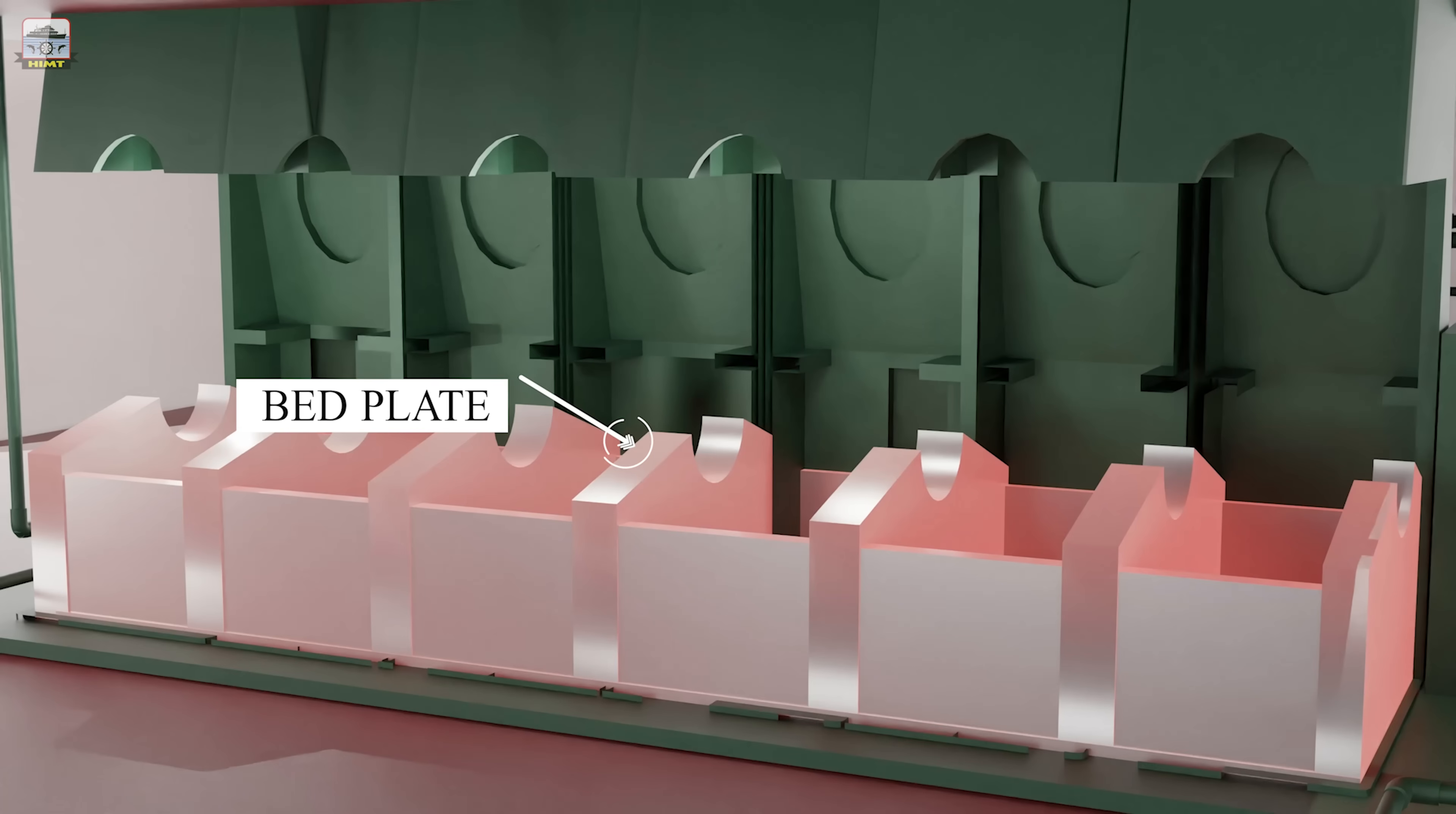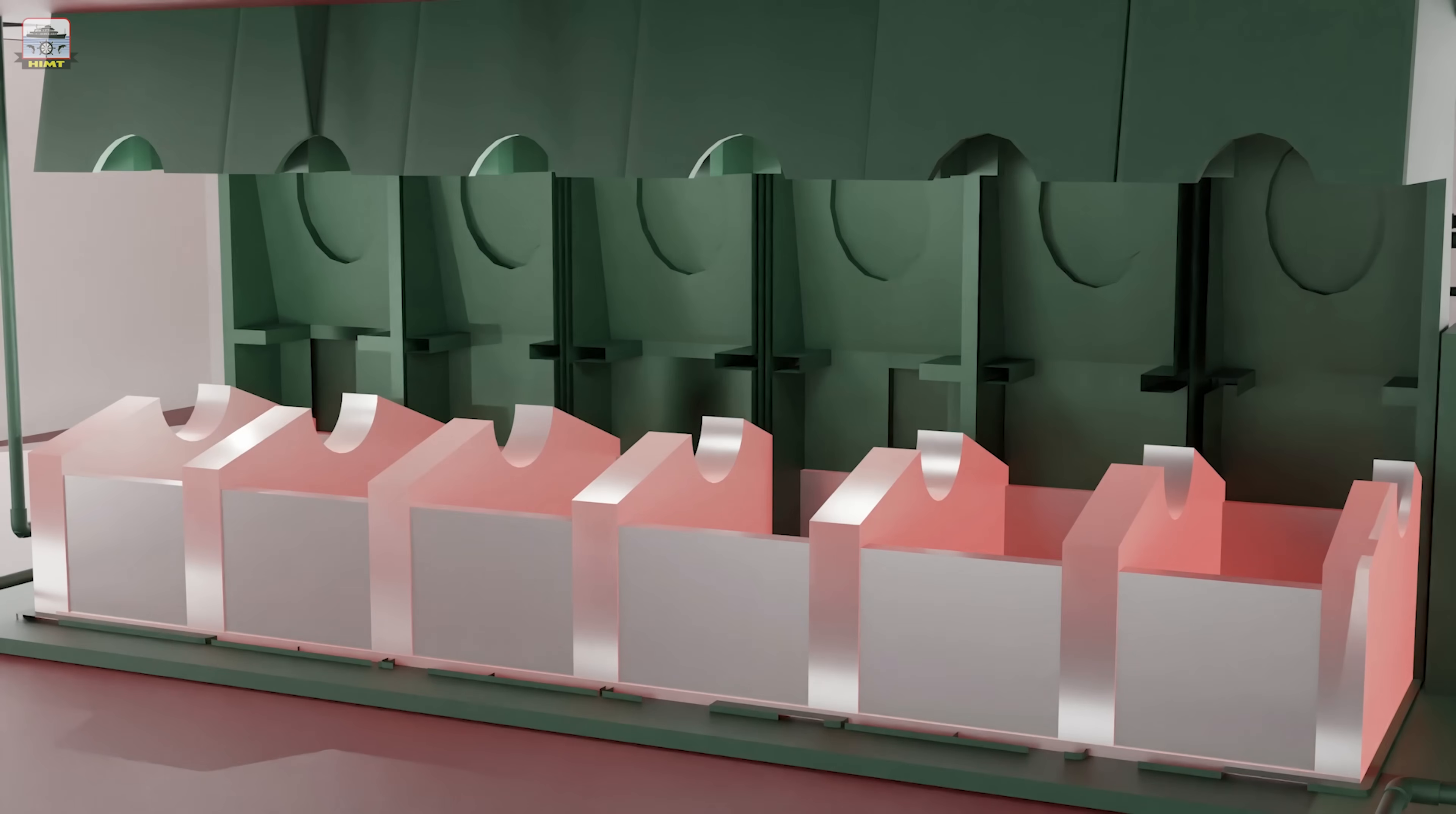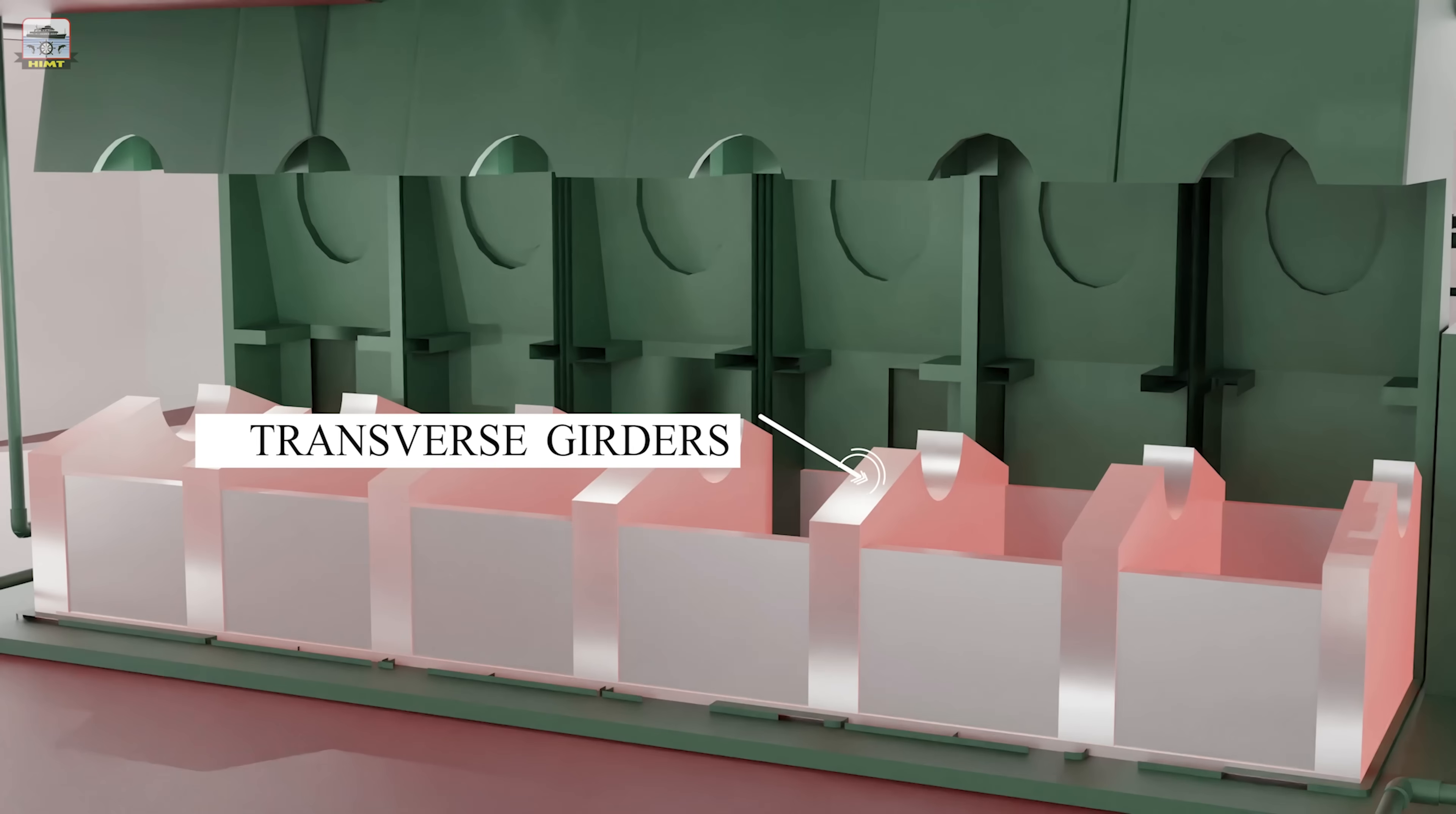This is the bed plate. It is the bottommost part of the engine on which the other parts are resting. The bed plate is made of two parallel girders running across the length of the engine. They are called longitudinal girders. They are connected with girders running across in transverse direction. They are called transverse girders.